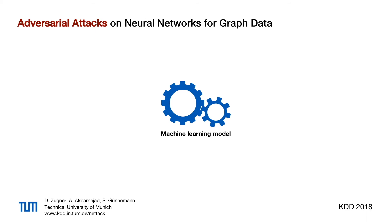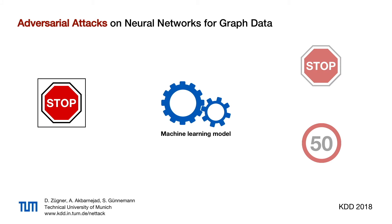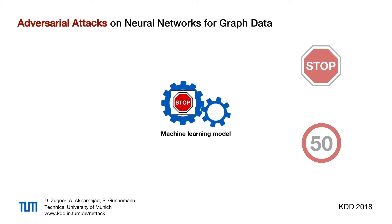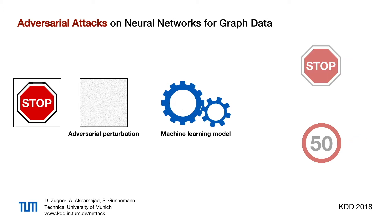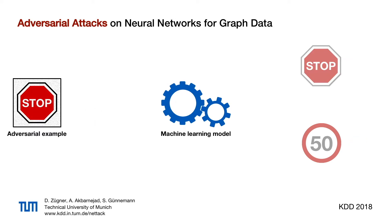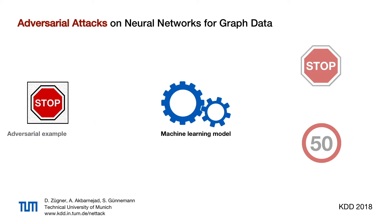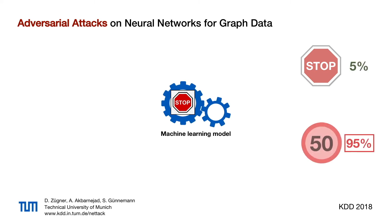Suppose we have a machine learning model whose task is to classify images of street signs into one of the two classes shown on the right. Recent deep learning approaches show impressive results in such tasks. However, slight perturbations to the input can fool a neural network to output a wrong class label with high certainty. Until recently, adversarial attacks were only studied for traditional data where each sample is independent of the others.